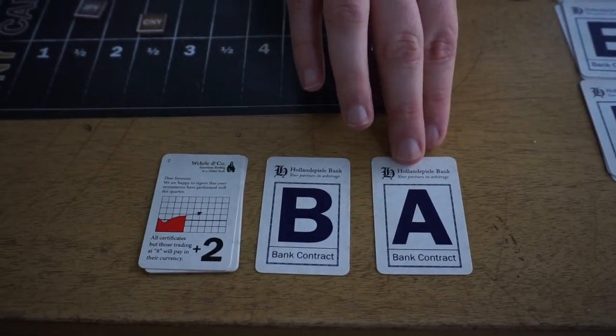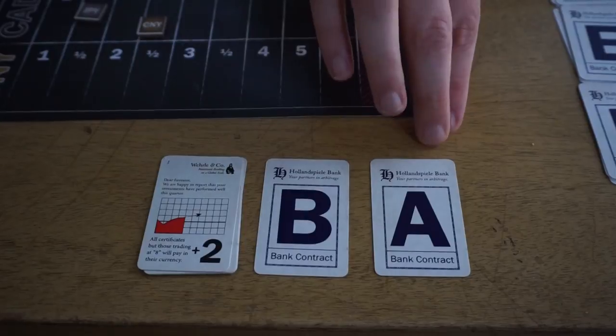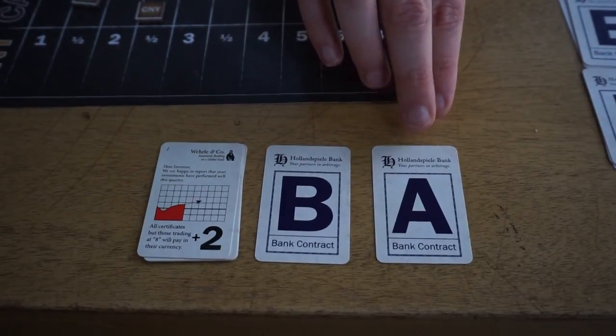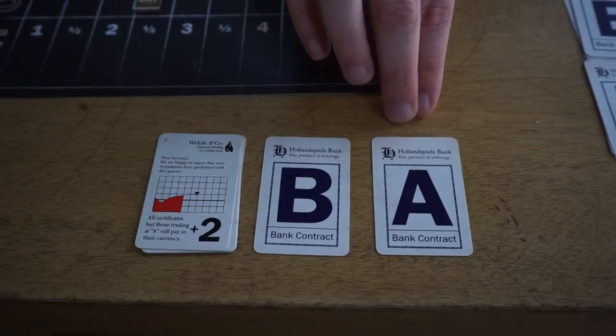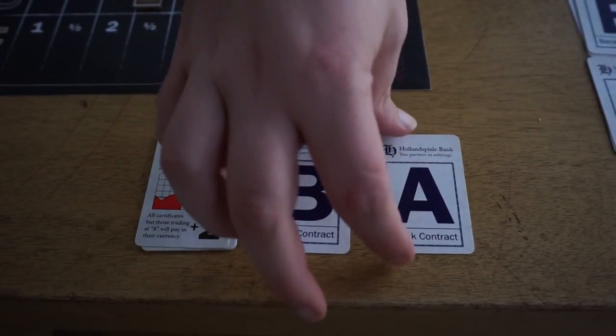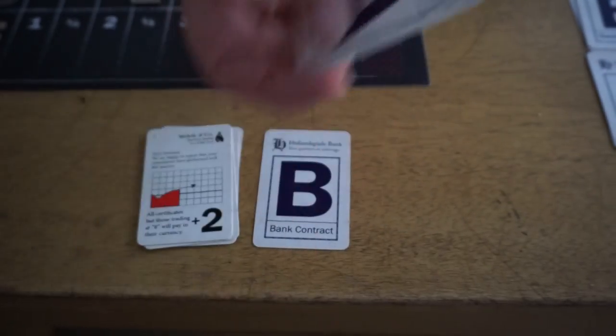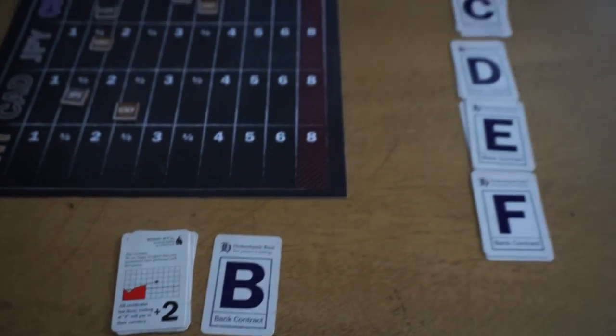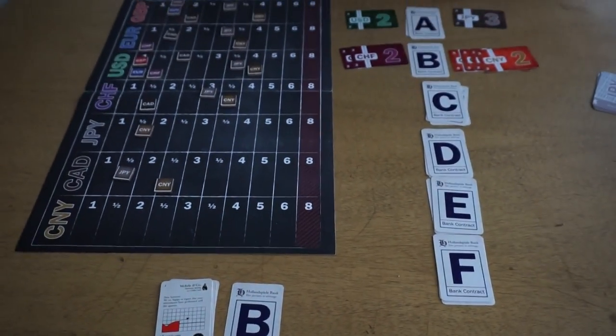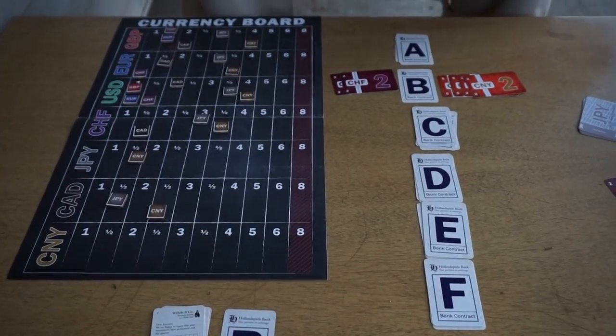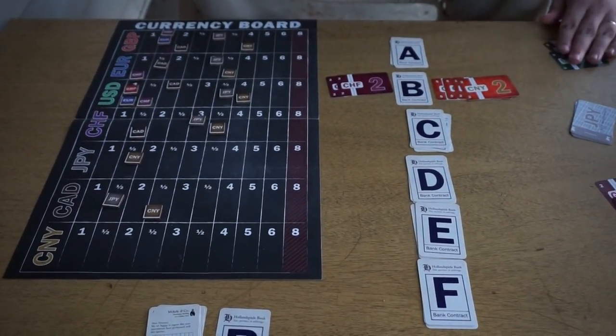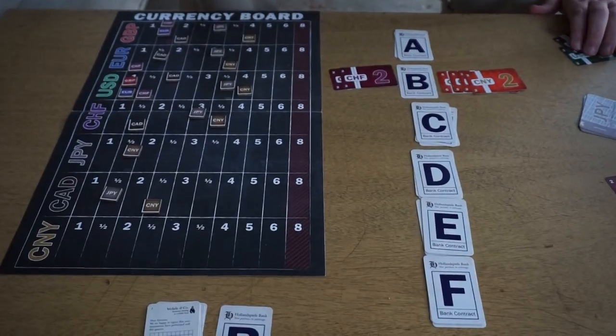And any player can call for the resolution of any first contract in the queue. So I don't necessarily need to be the player who has the A contract to say, let's resolve that A contract. When that's resolved, we're going to take it out of the contract queue, put it back in the contract display. And then this player is going to pay his two USD and get his three JPY and say bad words because he could have had four more bucks if he made the contract at a different time.